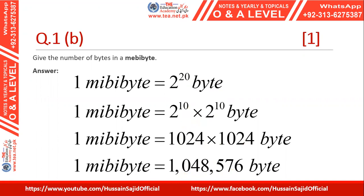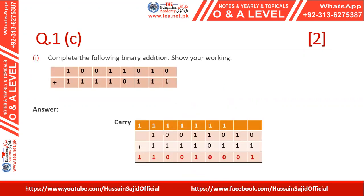Part c asks to complete the following binary addition. We add the two given numbers starting from the least significant bit on the right. Zero plus one equals one. One plus one equals zero with a carry of one to the next column. One plus one plus the carried one again gives zero with a carry of one. One plus one again gives zero and one is carried out to the next term.